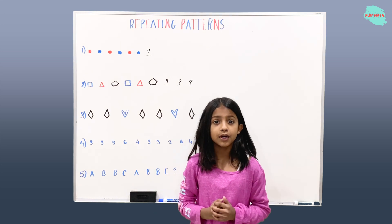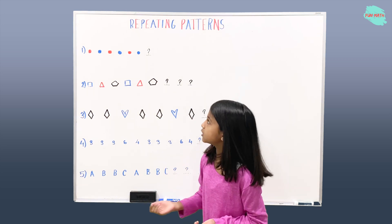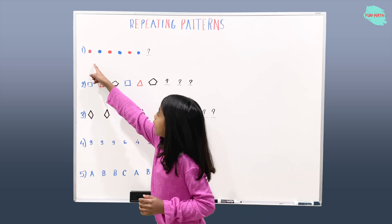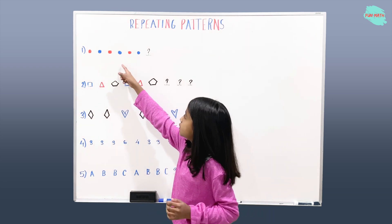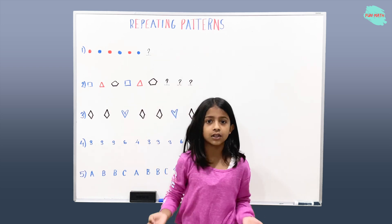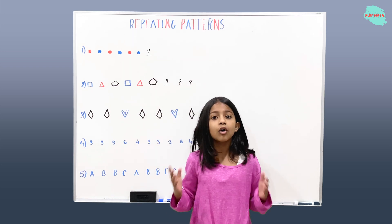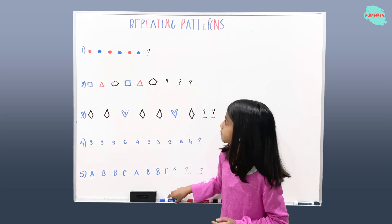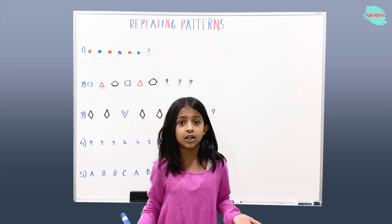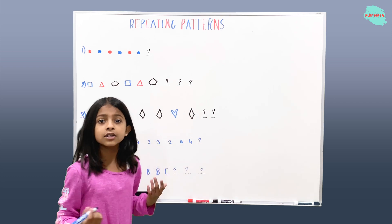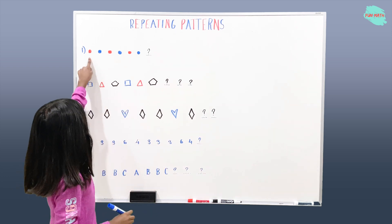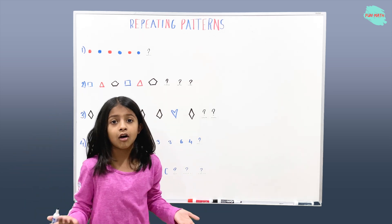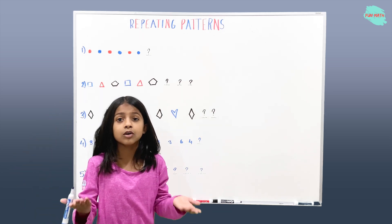Let's solve the first example. In the first example, the pattern is using colors. Red, blue, red, blue, red, blue — and you have to find the next color. What is the core? The colors that are repeating on and on are red and blue. So that's the core for example one.